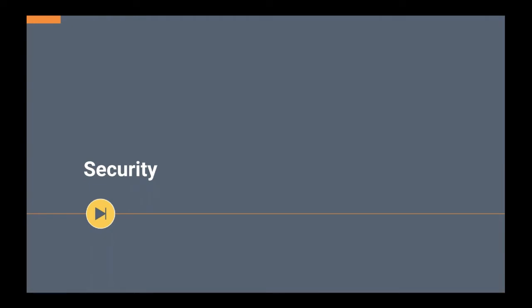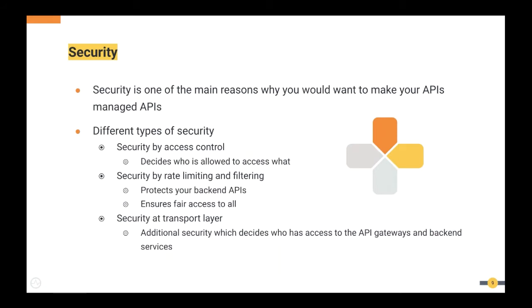The next key point is security. While security is not the only reason to do API management, it is one of the major reasons. Before off-the-shelf products, organizations used their own homegrown code to secure APIs. There are three types of security to consider: security by access control, security by rate limiting and filtering, and security at the transport layer.